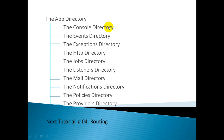The console directory contains all of the custom Artisan commands for the application. Then comes the Events directory. By default, we don't get this directory, but we can get it when we run the Artisan command event:generate or make:event. This directory contains event classes.